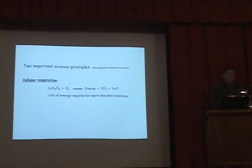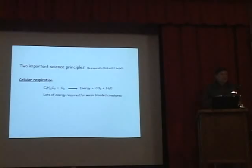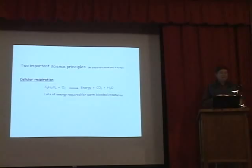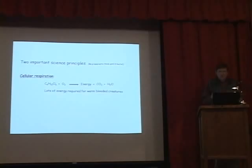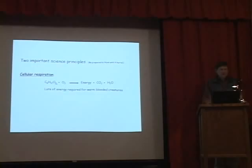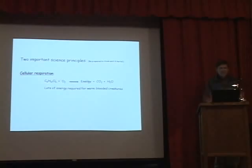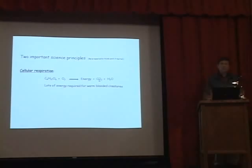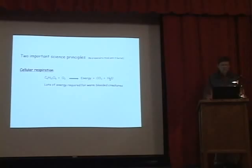Principle number one is cellular respiration. We all need energy, and just like you need oxygen to make wood burn in a stove, we need oxygen to make sugars burn in our cells. At the cellular level we take in sugars from the digestive tract and oxygen to oxidize those sugars, releasing energy. The formula starts with glucose, and when we break those bonds energy is released — carbon dioxide is exhaled as waste, and a little water is produced.